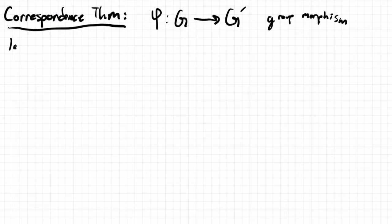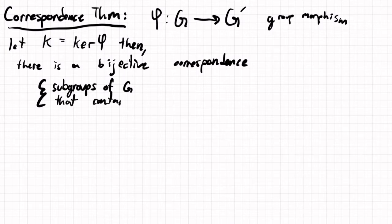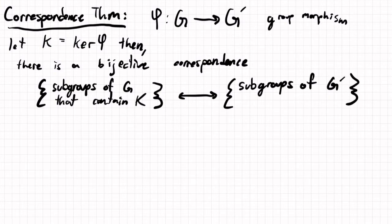And let's let k be the kernel of phi. So what the correspondence theorem says is the following: there is a bijective correspondence, and that correspondence is between subgroups of G that contain k and subgroups of G prime.